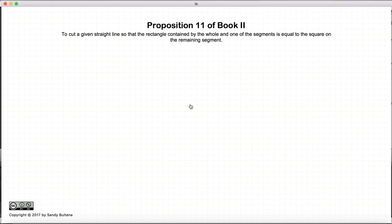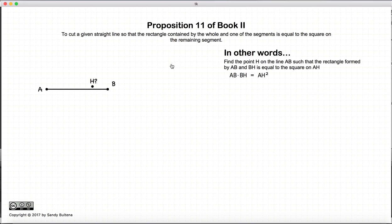All right, so this proof we're going to cut a straight line into segments such that the rectangle formed by AB and BH is equal to the square formed on AH. So just to show you, this is actually the same thing as getting the extreme ratio.